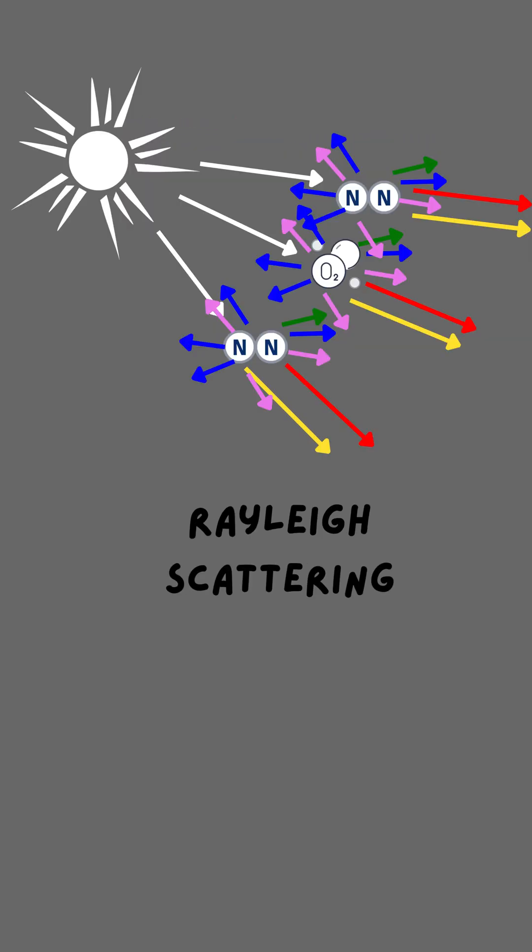As sunlight travels through Earth's atmosphere, it encounters air molecules and tiny particles, causing it to scatter, which means light is forced to deviate from a straight path.